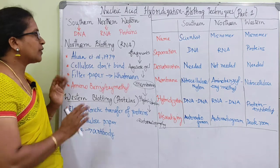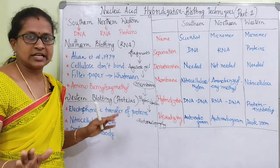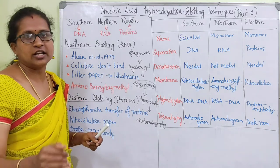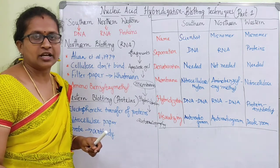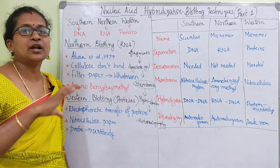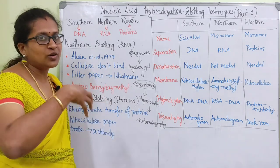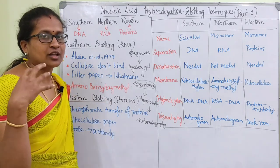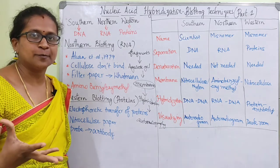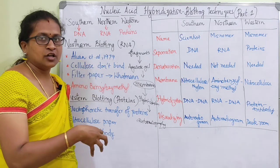Northern blotting is exclusively only for RNAs. The dependency nature of all these nucleic acids is different. Based on the molecule, the technique is getting different.